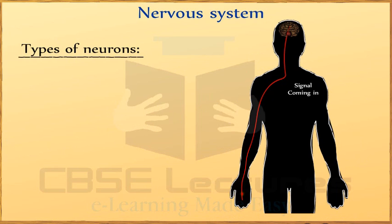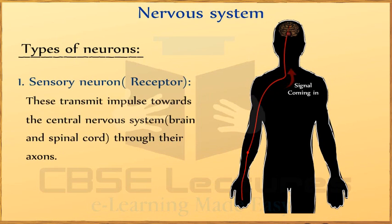How many types of neurons are there? There are three types of neurons. First, sensory neuron or receptor: these transmit impulse towards the central nervous system — brain and spinal cord — through their axon.